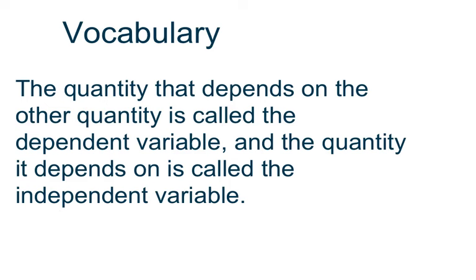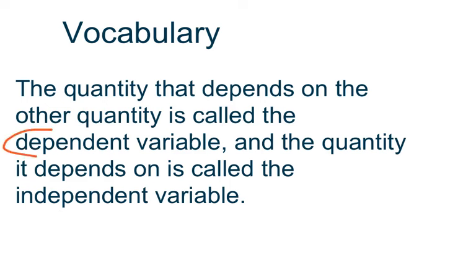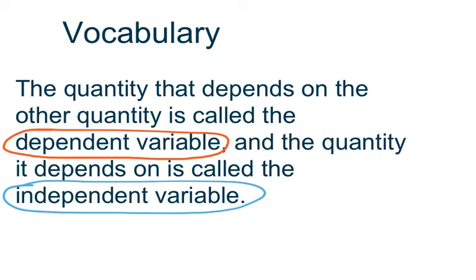Let's take a look at our vocabulary — you definitely need to write this down and have this to refer back to. The quantity that depends on the other quantity is called the dependent variable, and the quantity it depends on is called the independent variable. Let's be sure to highlight our vocabulary words: dependent variable and independent variable.